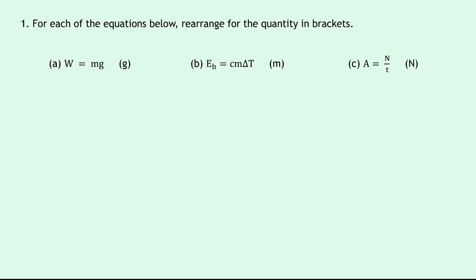Question one has three parts — A, B and C — and in each one we're going to be rearranging for the quantity given in the brackets. For part A we've got W equals mg, which is the weight equation relating weight, mass and gravitational field strength. In part A we're asked to rearrange W equals mg to find g.